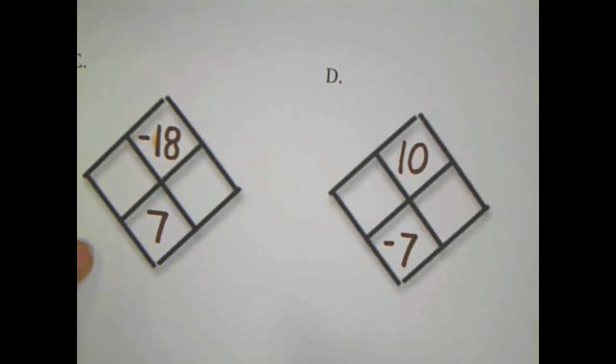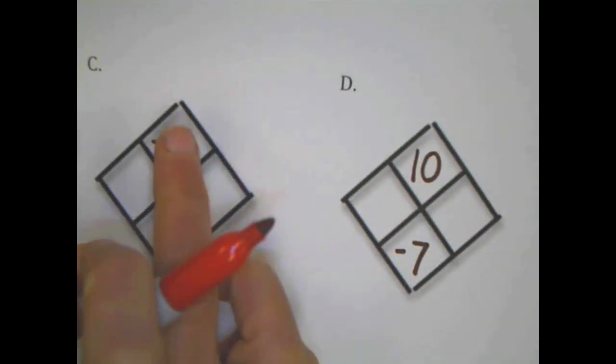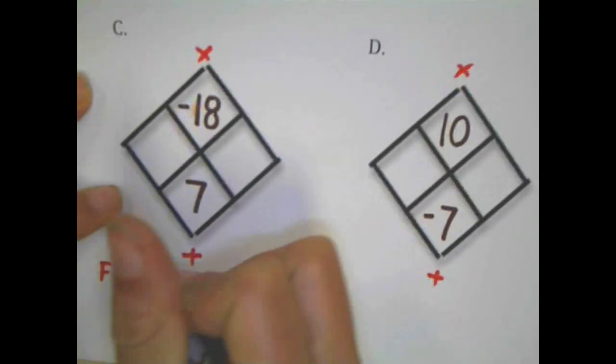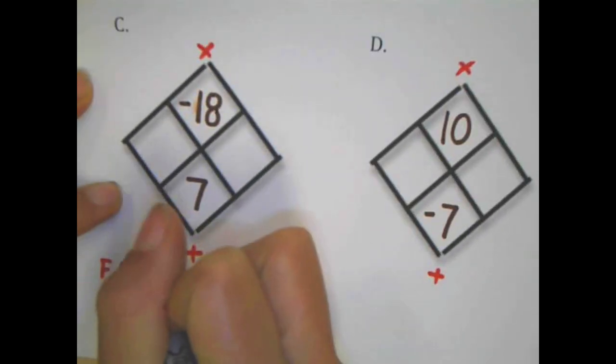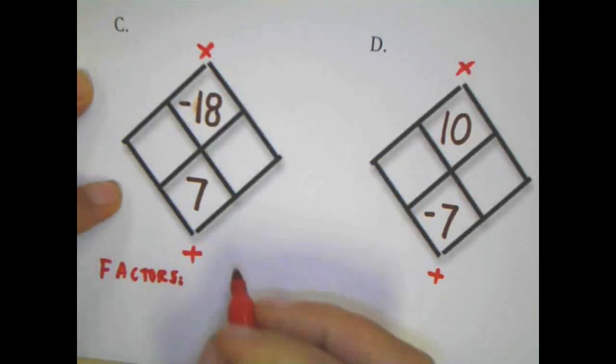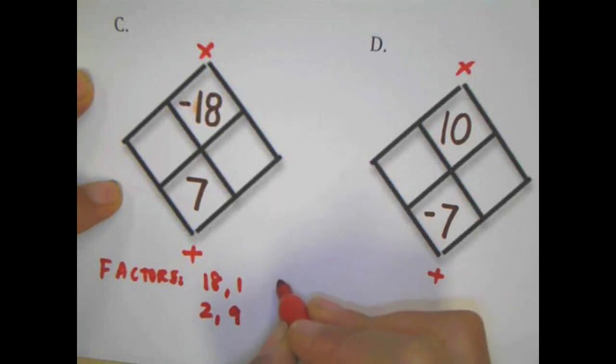Now these ones are a little trickier because they give us the product and the sum. I always put the product and the sum on top. What I recommend is that you write down the factors of that product, negative 18. At first, don't even deal with the sign, just write down the factors: 18 and 1, 2 and 9, and 3 and 6.